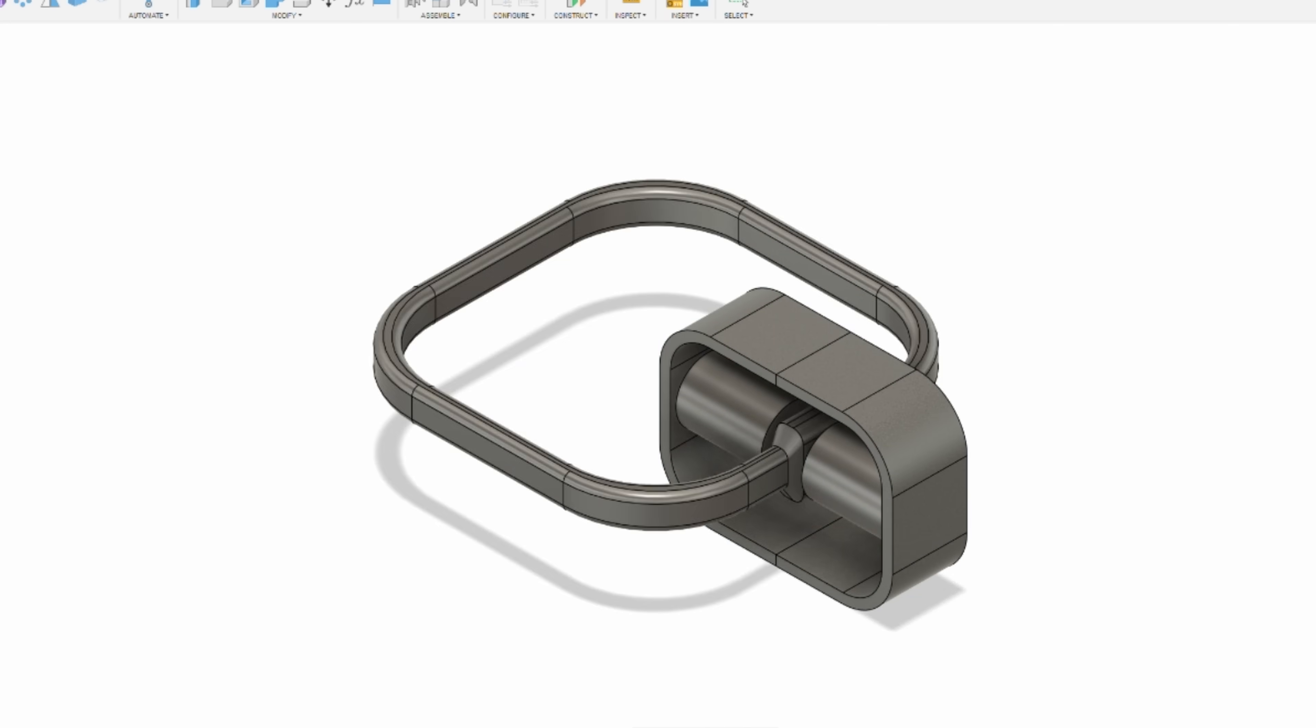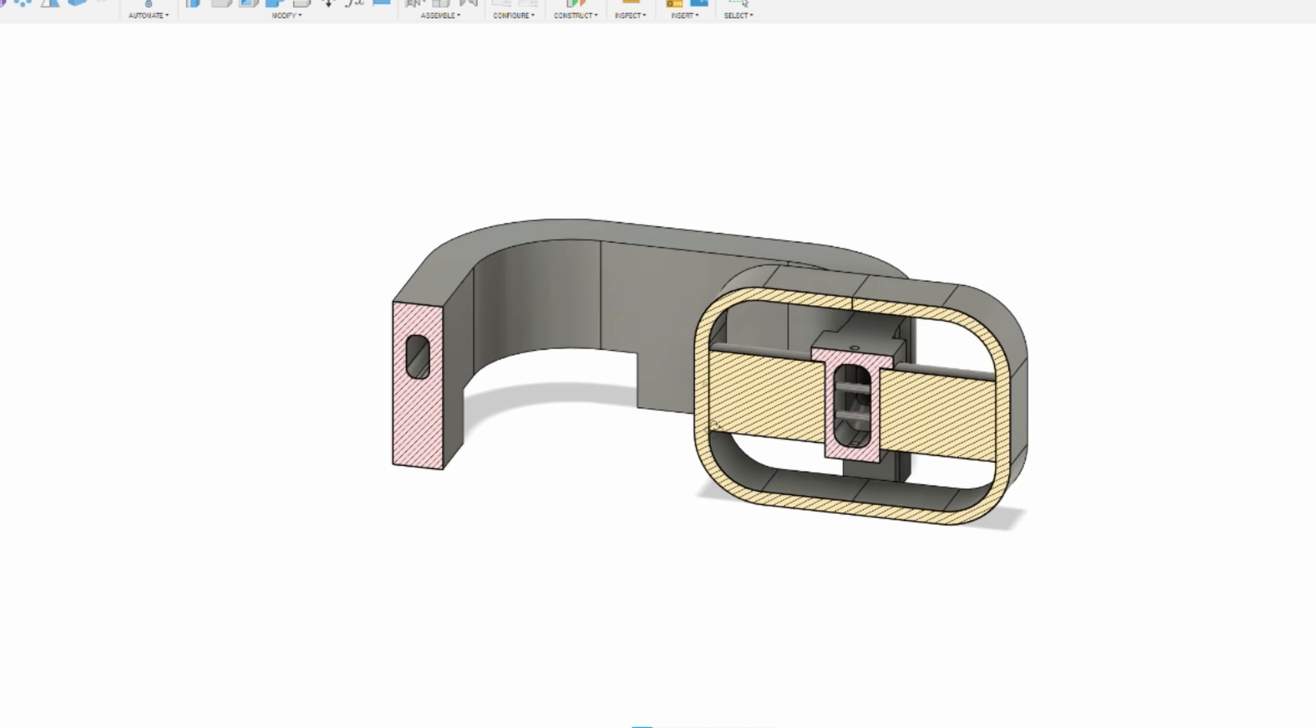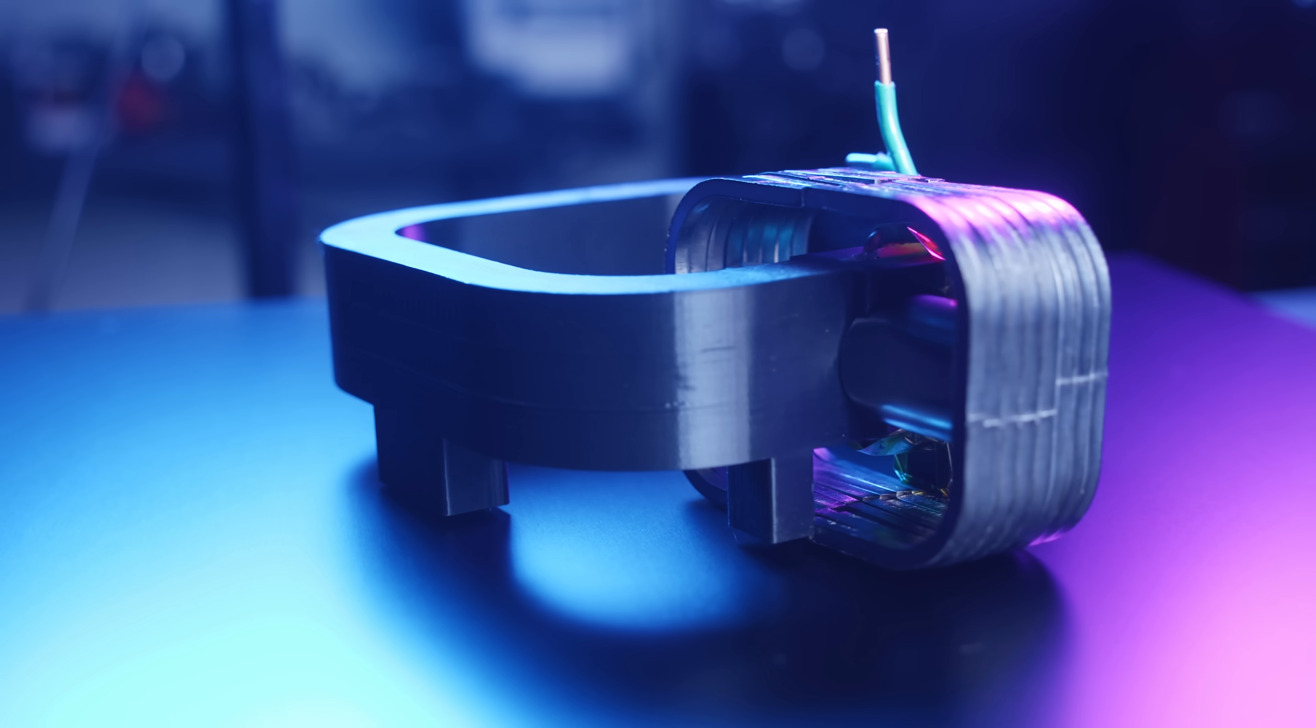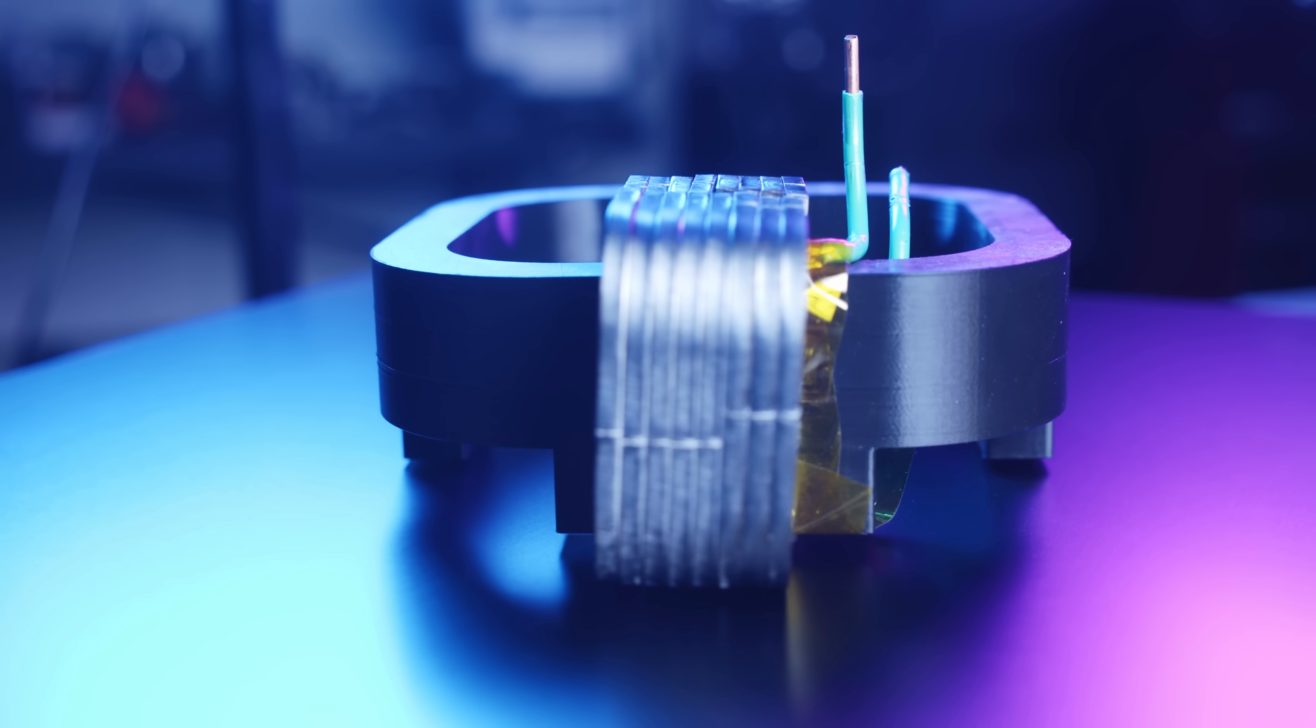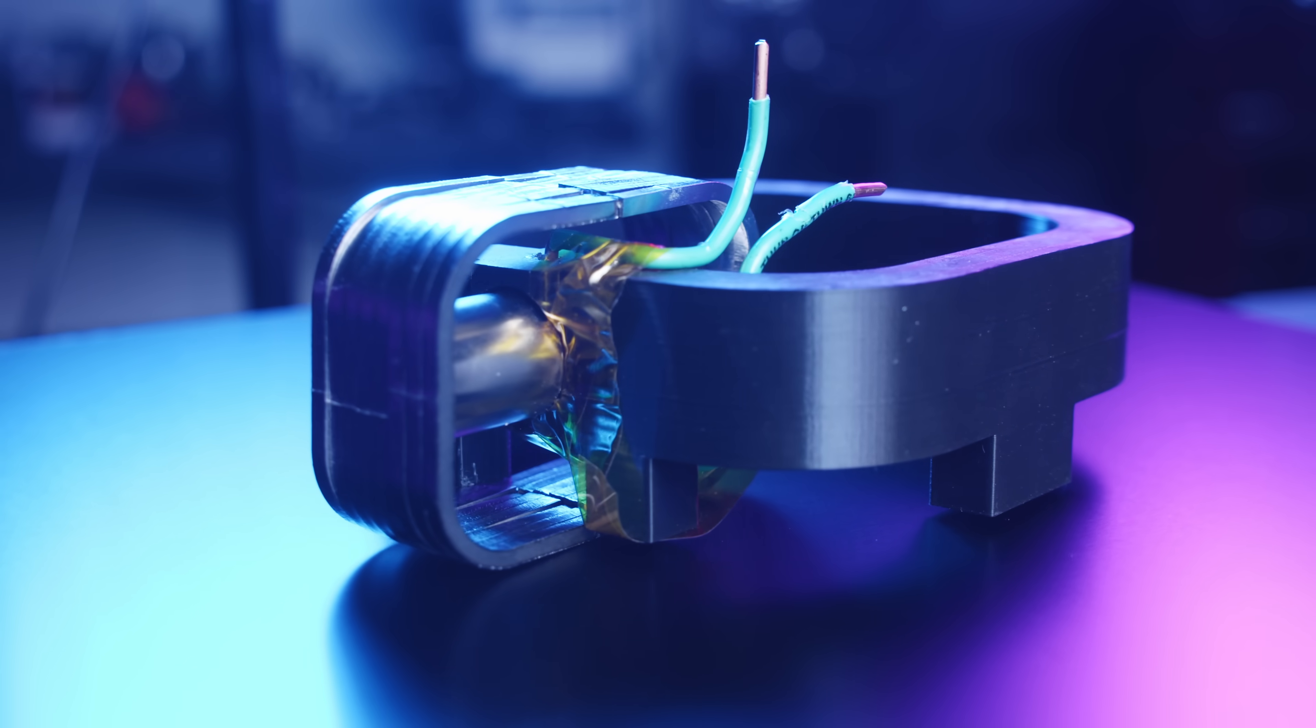I wanted to make a larger model to test, so I designed and printed a second device. This one is a rounded square shape with a rectangular channel to hold the liquid metal.